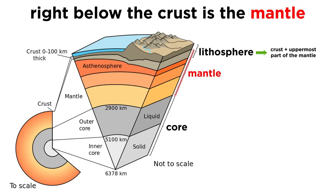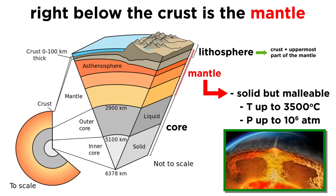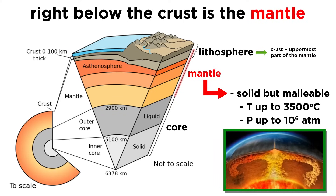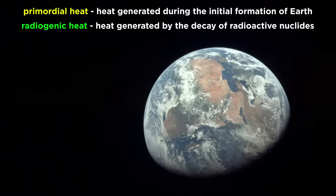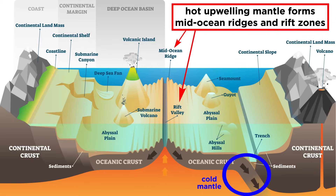Below the crust is the mantle, a solid but malleable layer with temperatures reaching 3,500 degrees Celsius and pressures up to a million times greater than atmospheric pressure. Although the mantle is solid, over millions of years it convects like the world's largest lava lamp as Earth's primordial and radiogenic heat is transferred to the surface and radiated to space. Mid-ocean ridges and rift zones form beneath large areas of hot upwelling mantle, while subduction zones form beneath areas of cold sinking mantle.